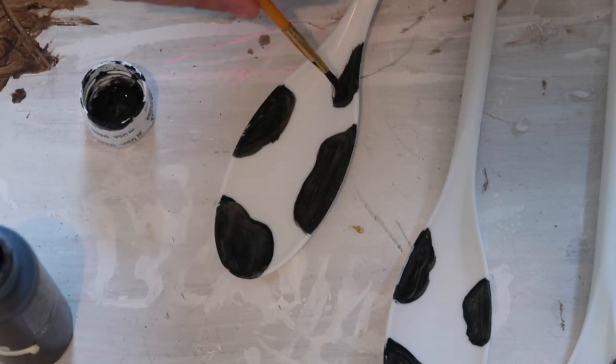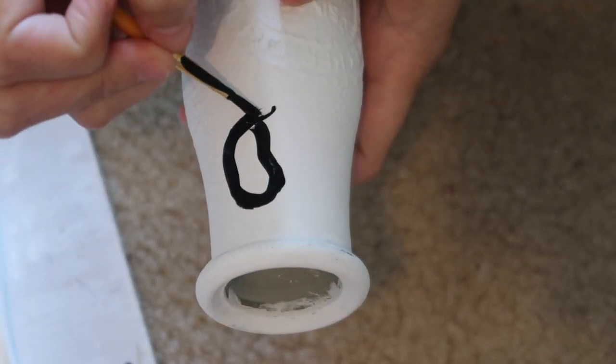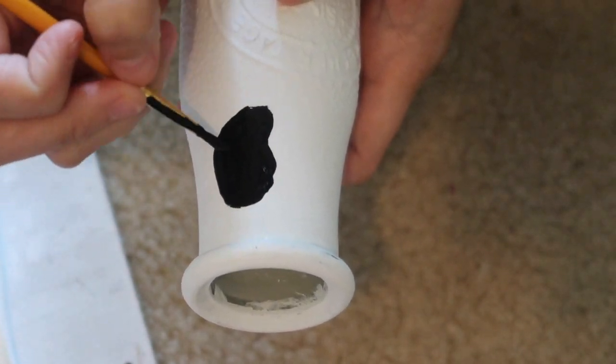And then once my little jars were completely dry, I just did the exact same thing and just drew little cow spots on them.